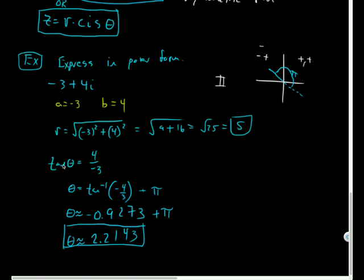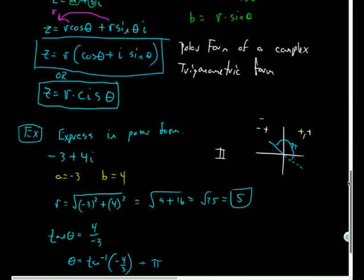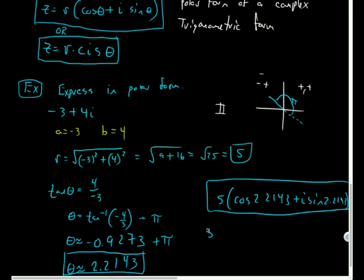So this point represented this way, I'm going to plug r and theta into these. So I'm going to have my point, I could call it z if I wanted to. But it will be 5 parentheses cosine of 2.2143 plus i sine of 2.2143. Or I can write the nice shorthand notation of 5 times cis of 2.2143. That's another way I could represent that. So this is a polar form or a trigonometric form of this complex number. And so I think these kind of work quite nicely.